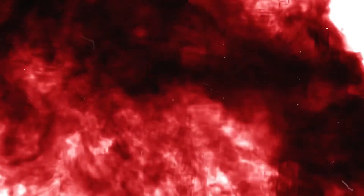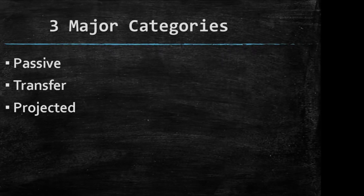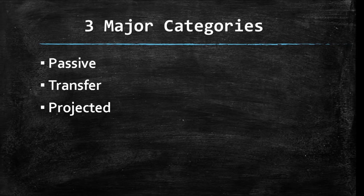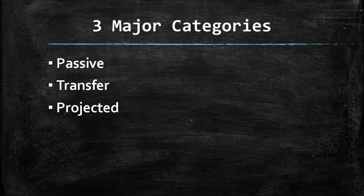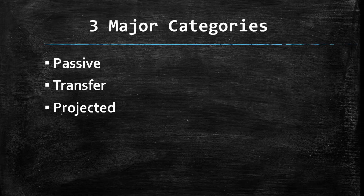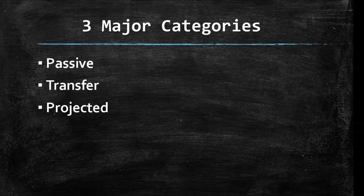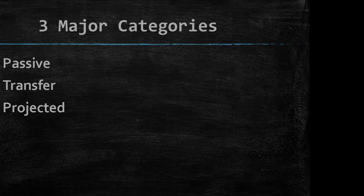There are three major categories of bloodstain patterns: Passive, Transfer, and Projected. Now we will separately discuss each of them with their subtypes.